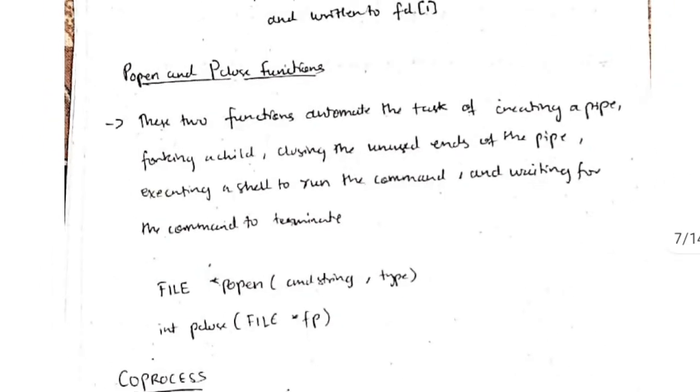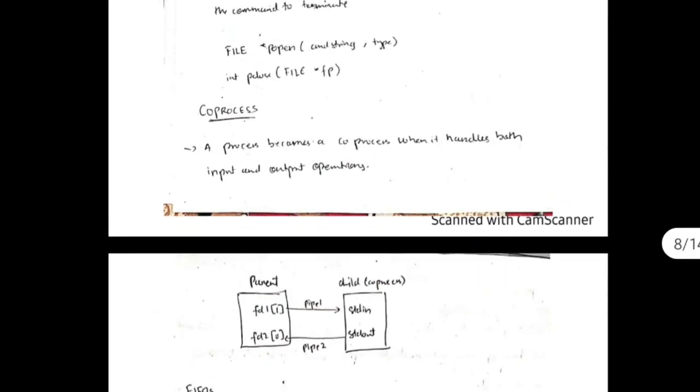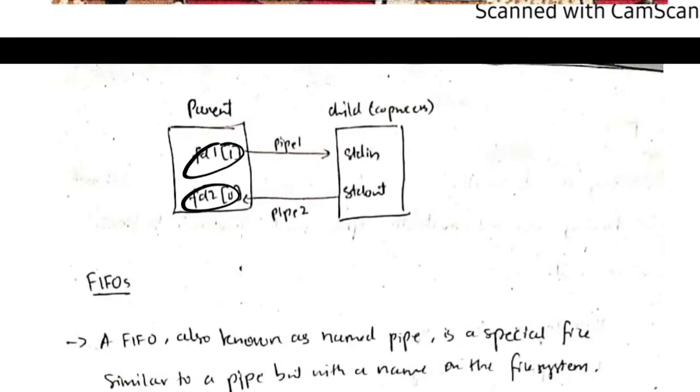Coprocess means if it handles both of the input and output operations, that is known as coprocess. Here is the diagram: we have the fd1 and fd0, it is using the pipe to write and read the functions.